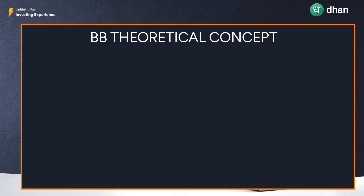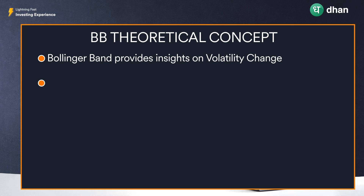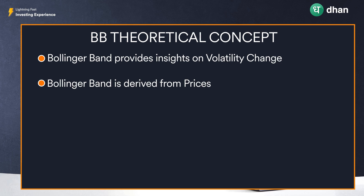What is more important is to understand how to interpret these values. Bollinger Bands provide insight on volatility change and are derived from prices, since the two standard deviation bands are calculated with respect to the price. They will not give you the overall trend — the SMA line, or the midline, is what gives you an indication of the overall trend. That is why the midline, or the 20-period simple moving average, is a very crucial component of Bollinger Bands.